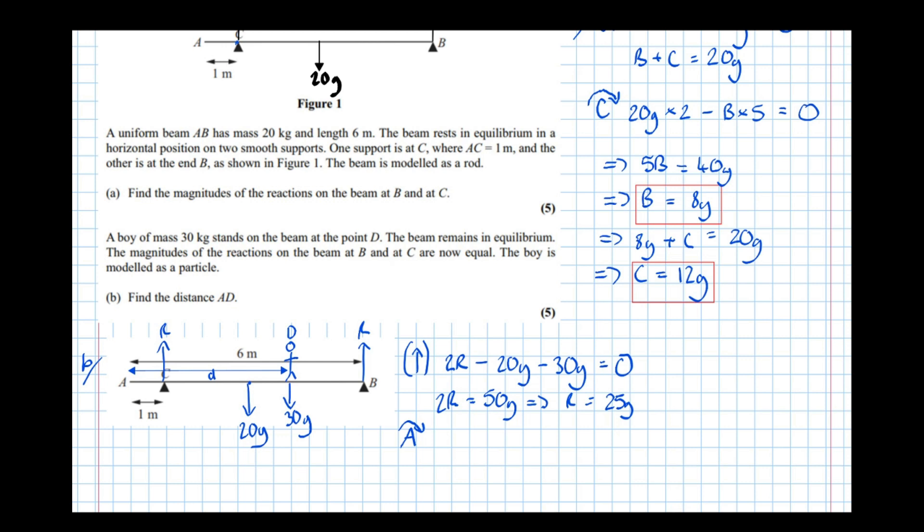So 20G times 3, then plus the 30G times the distance D that we don't know. Let's subtract all the anti-clockwise moments now, so take away. And we know now that R is 25G, so 25G times 1, that's that one there. And then for this one, take 25G times 6, equals zero.